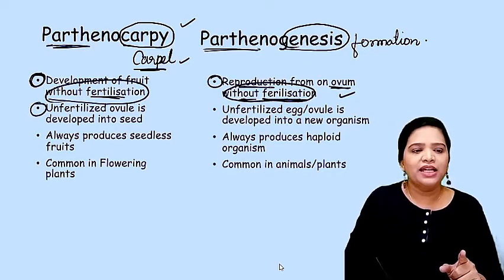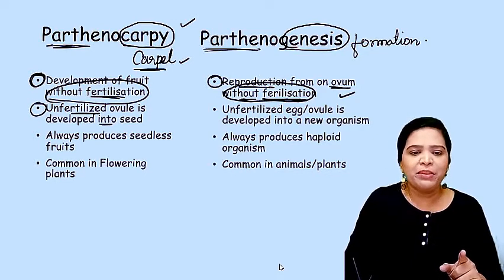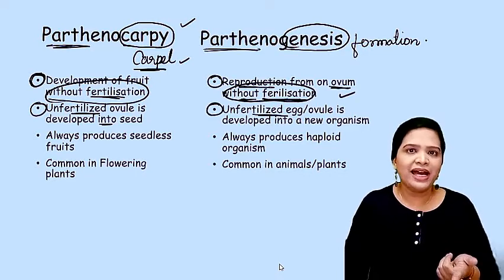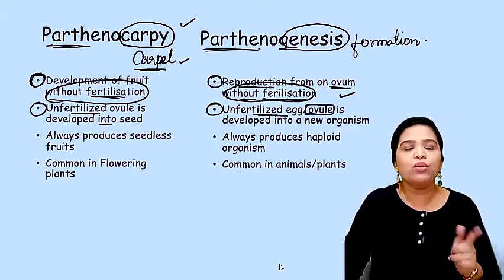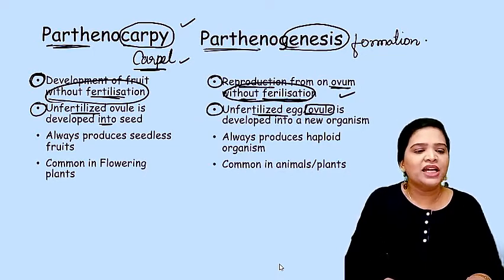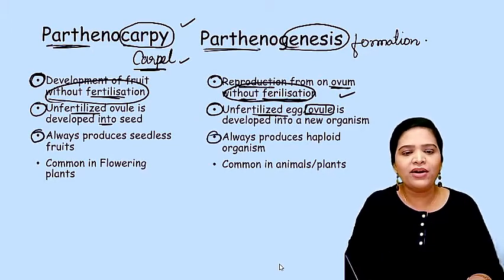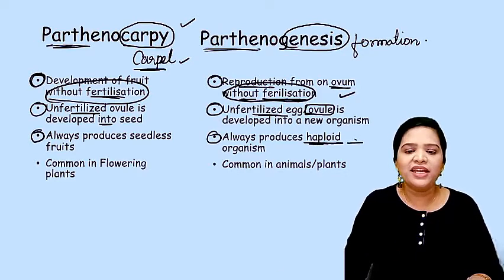In parthenocarpy, the unfertilized ovule is developed into a seed-like structure. In parthenogenesis, an unfertilized egg is developed into a new organism. In plants, parthenogenesis means an unfertilized ovule develops into a new plant. In parthenocarpy, all fruits are seedless. In parthenogenesis, the organisms produced are haploid in nature and mostly sterile.